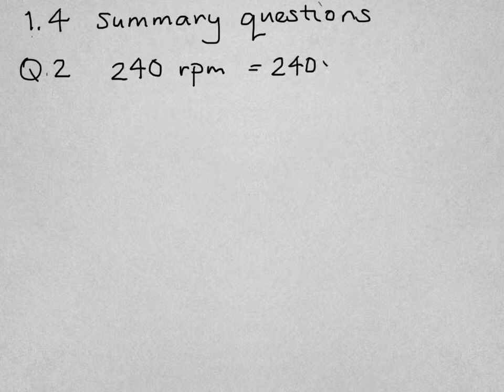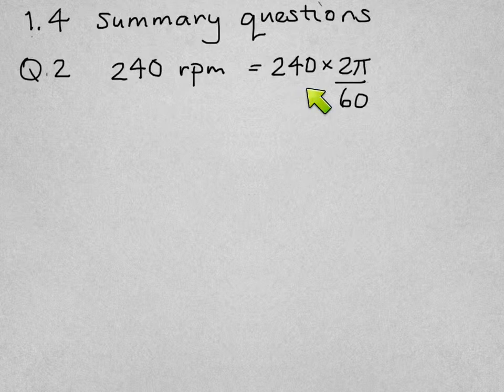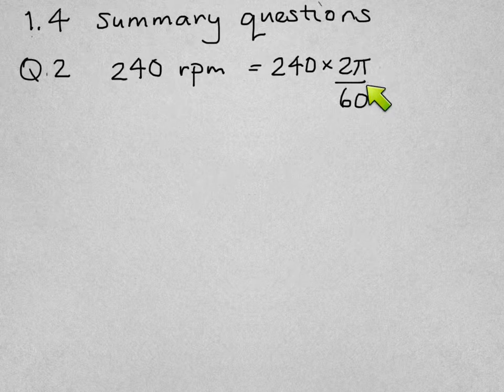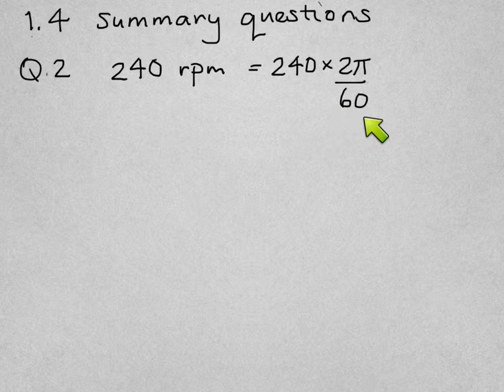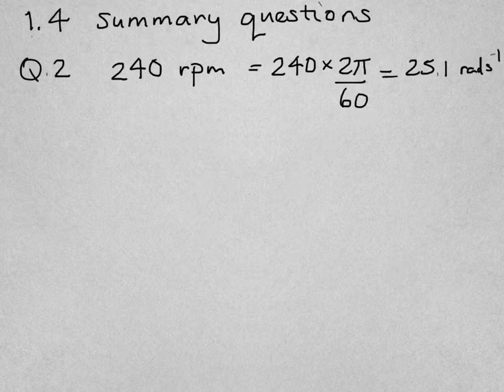The first thing we're going to do is convert that to radians per second. 240 revolutions, there are 2π radians in each revolution so you multiply by 2π, and that's still per minute so we only do a 60th of that number in a second so we divide by 60. That gives us 25.1 radians per second.